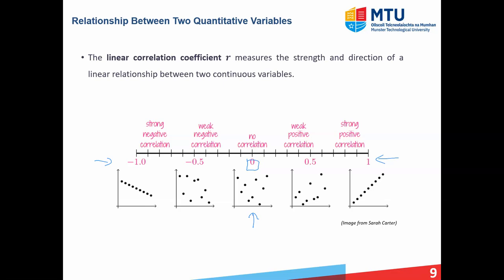As you move from zero to plus one, you're moving into the positive relationship area, and the closer you get to plus one, the more perfect the relationship is — at plus one, a straight line perfectly goes through the points. Moving from zero to minus one moves into negative linear relationships. It is important to emphasize that this correlation coefficient only works for checking if your data is linearly related or not.